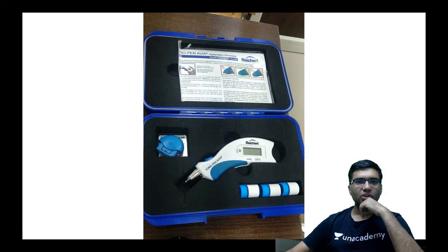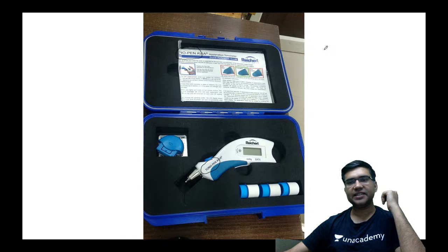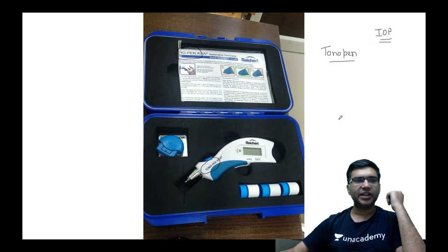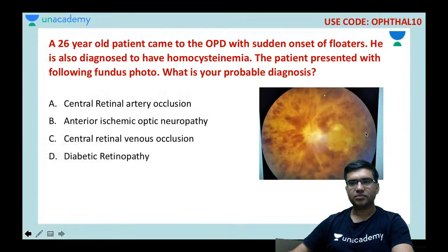This next instrument is used in patients with corneal scarring. You can see it is written on the instrument. This is called a Tonopen and it is also used to measure intraocular pressure when there is corneal scarring.